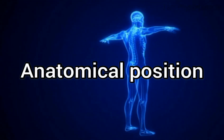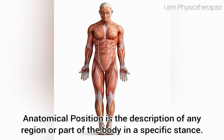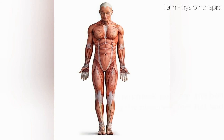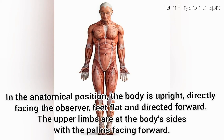Anatomical position is the description of any region or part of the body in a specific stance. In the anatomical position, the body is upright directly facing the observer. Feet are flat and directed forward, and the upper limbs are at the body's sides with the palms facing forward.